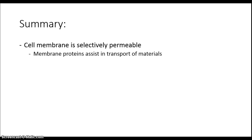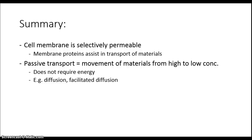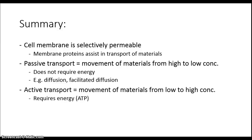In summary, the cell membrane is selectively permeable. There are a number of components of the cell membrane, including lipids, carbohydrates, and proteins. These proteins can help in moving materials across the membrane if they have trouble doing so by themselves. Passive transport is the movement of molecules along their concentration gradient from high to low concentration — this does not require energy and includes simple diffusion and facilitated diffusion. Active transport, on the other hand, is the movement of molecules from low to high concentration, which requires ATP to move molecules against their concentration gradient.